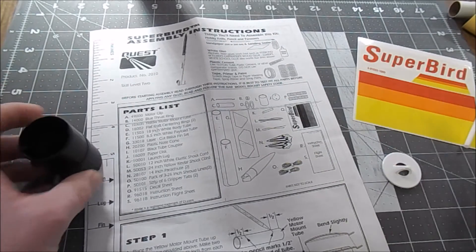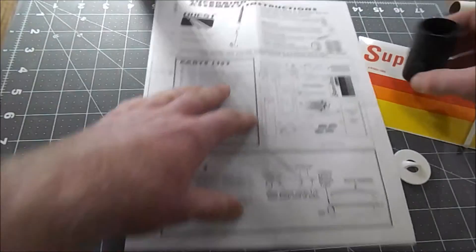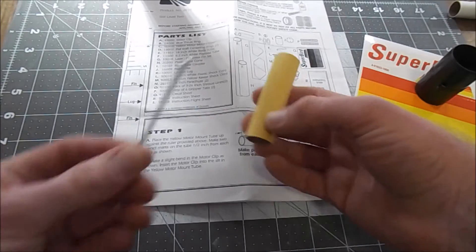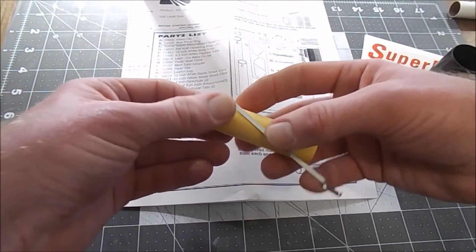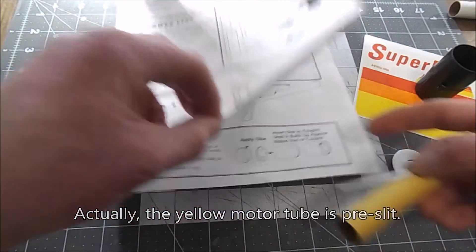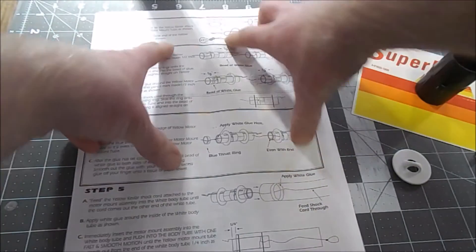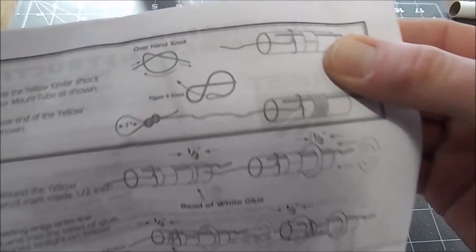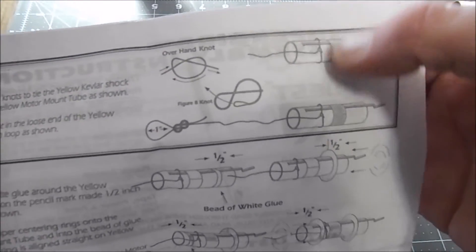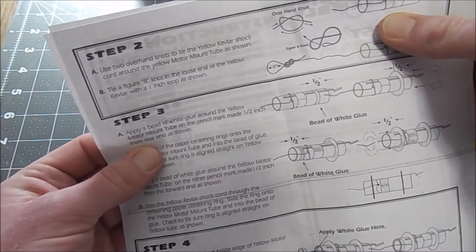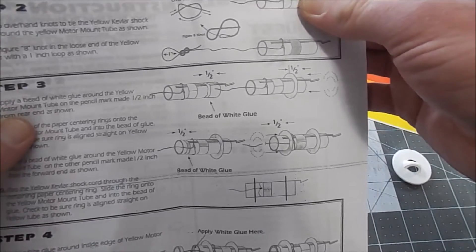Then we come to the motor mount assembly. It's a pretty typical motor mount assembly - you've got your hook, you've got your tube, you stick the hook into the cut, a little slit, stick the hook into the tube. Then you go to the next page where you start to assemble the shock cord and centering rings. But here's something very interesting: if you look here it appears that there is a bit of tape around the motor hook, however it doesn't say anywhere to put tape around the motor hook.